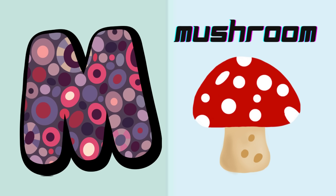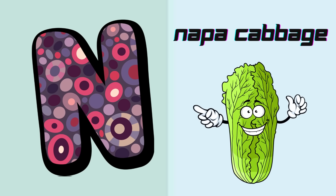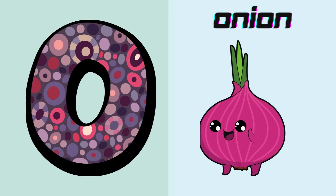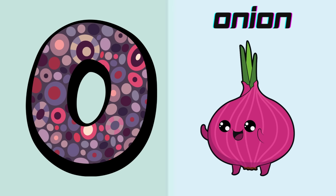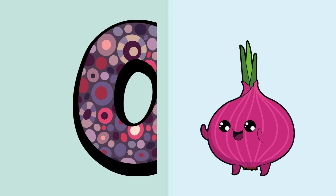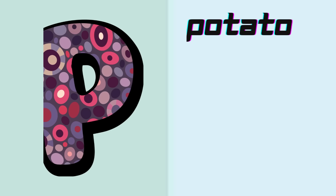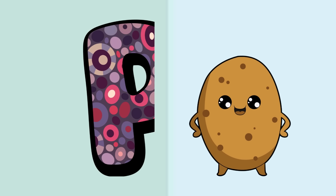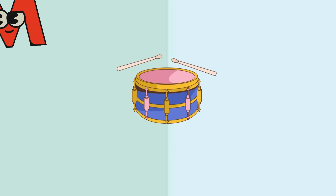M is for Mushroom, M, M, Mushroom. N is for Napa Cabbage, N, N, Napa Cabbage. O is for Onion, O, O, Onion. P is for Potato, P, P, Potato.